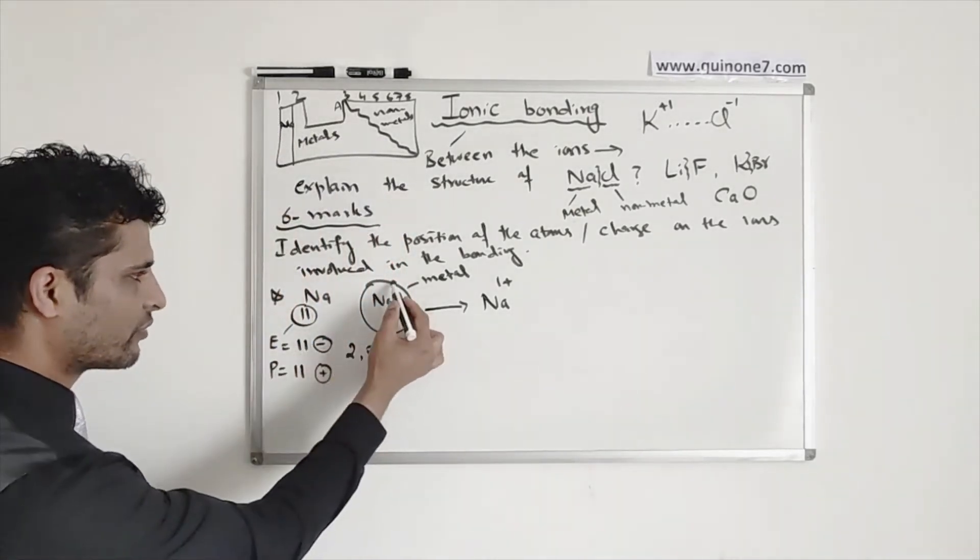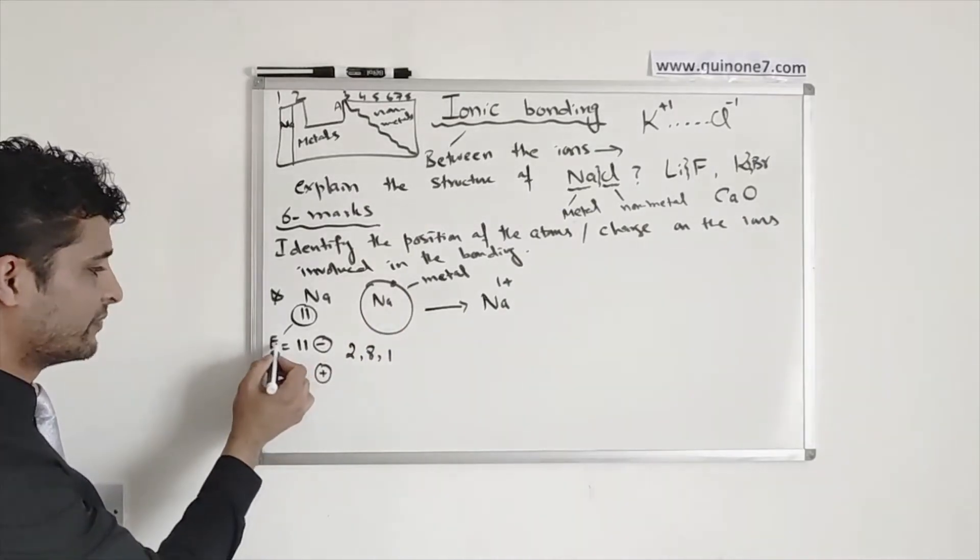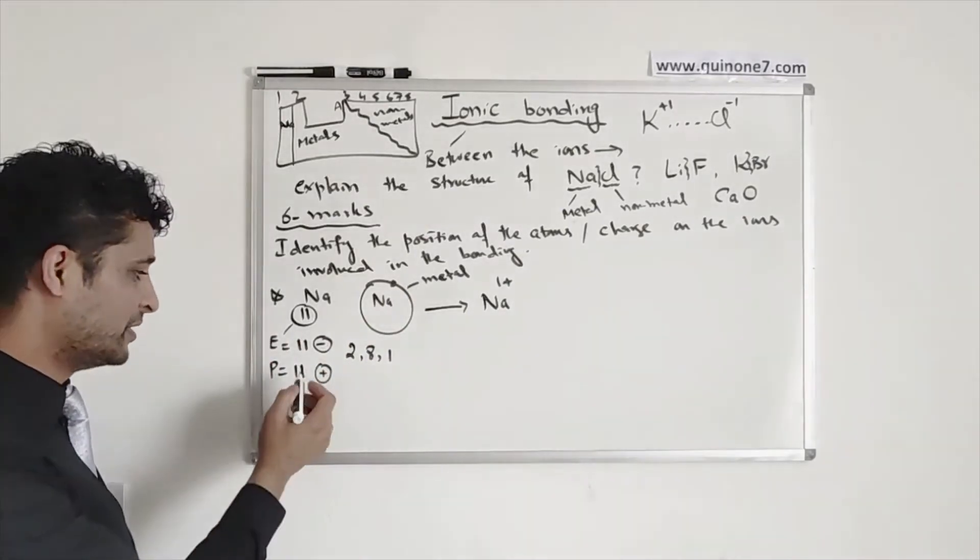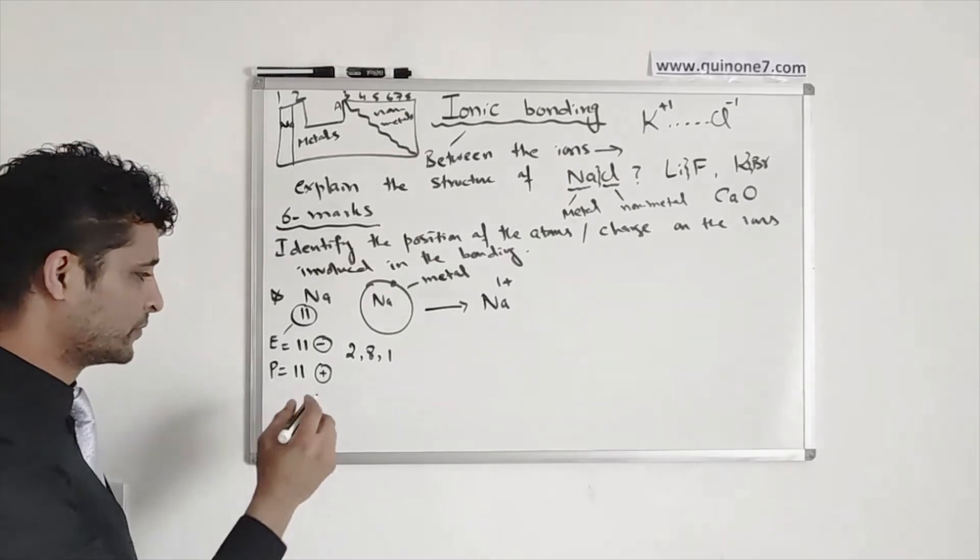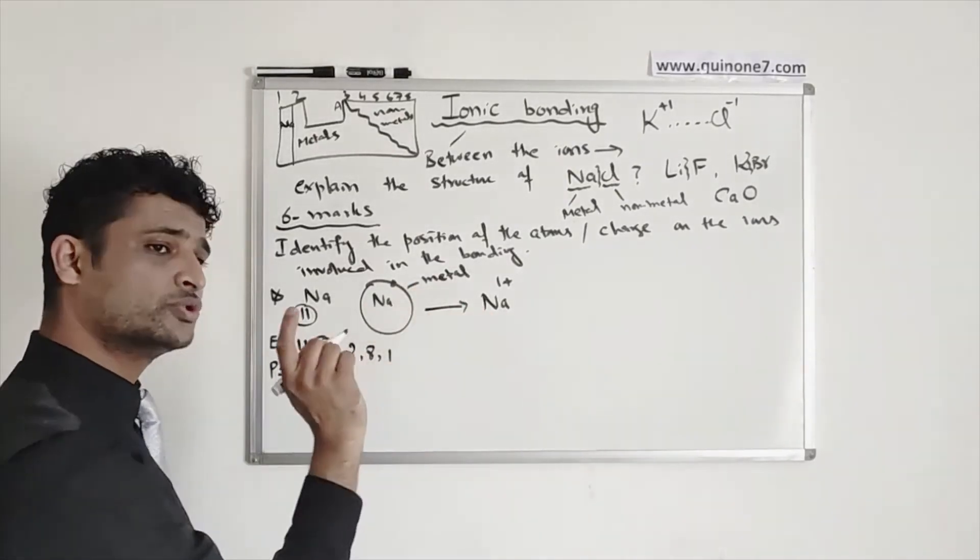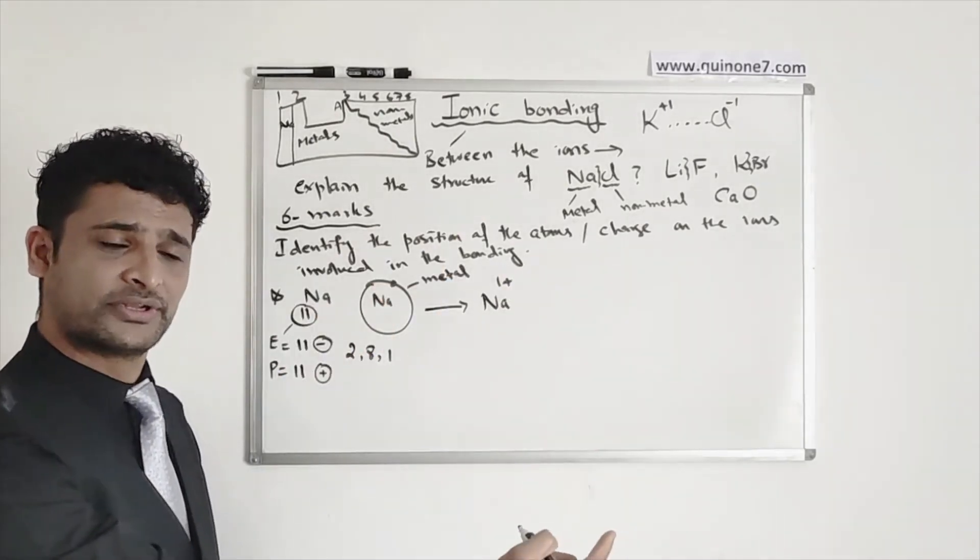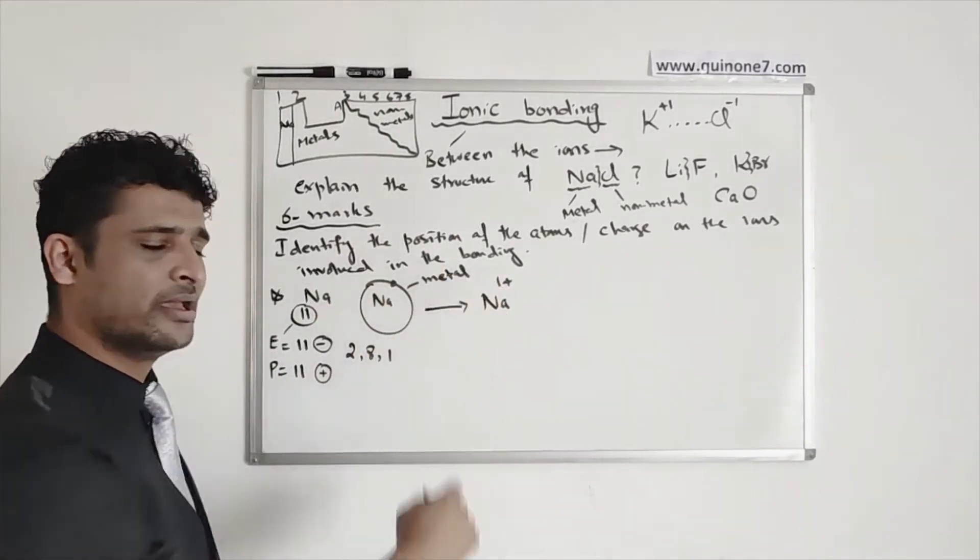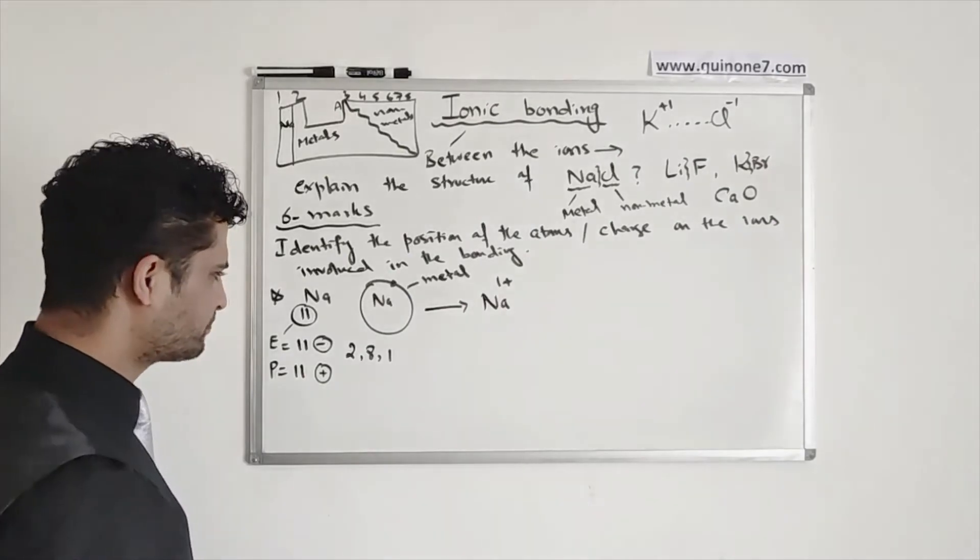Now, after losing one electron from the outer shell, it will have 10 electrons left. That means it will have extra proton. So this will have 10 electrons and 11 protons after losing this electron. Because it has extra one positive charge, that's why it carries plus 1 charge.